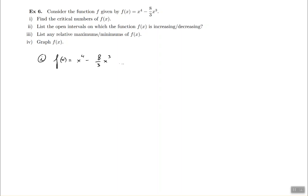In part 1, they want the critical numbers. So I need to find the derivative first. So f prime of x is going to be 4x to the power of 3 minus 8 times 3 divided by 3 is going to be 8x squared, which can be factored as 4x squared times x minus 2. That's my derivative.